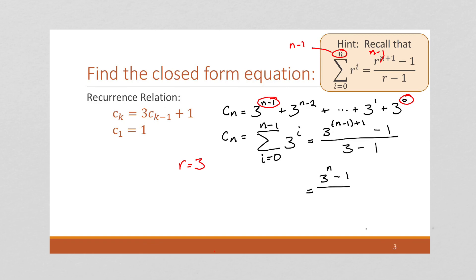And if we simplify that, we're going to get that this is 3 minus 1, oh, 3 to the n, excuse me, 3 to the n minus 1 over 2. And that is going to be our explicit formula.